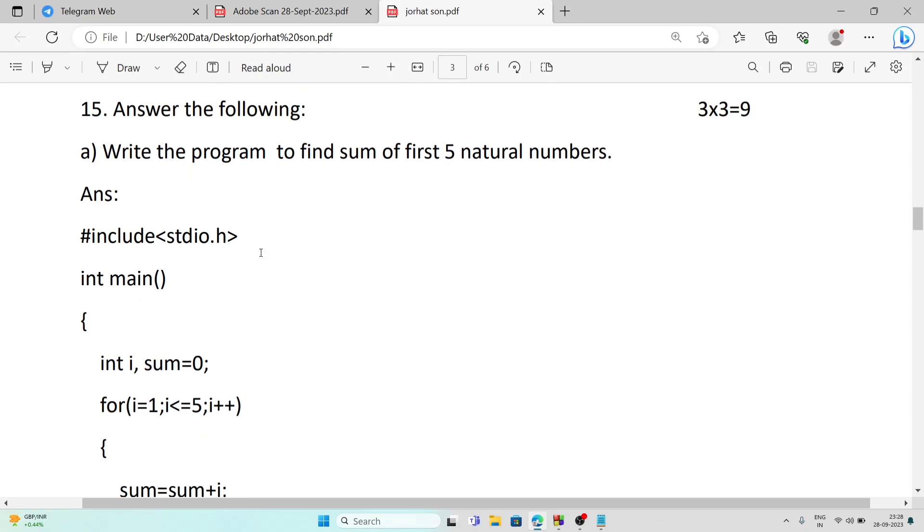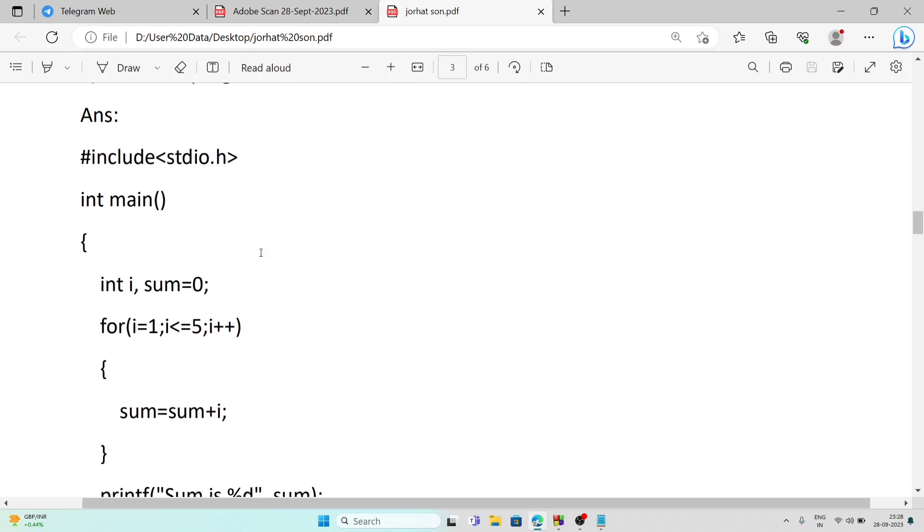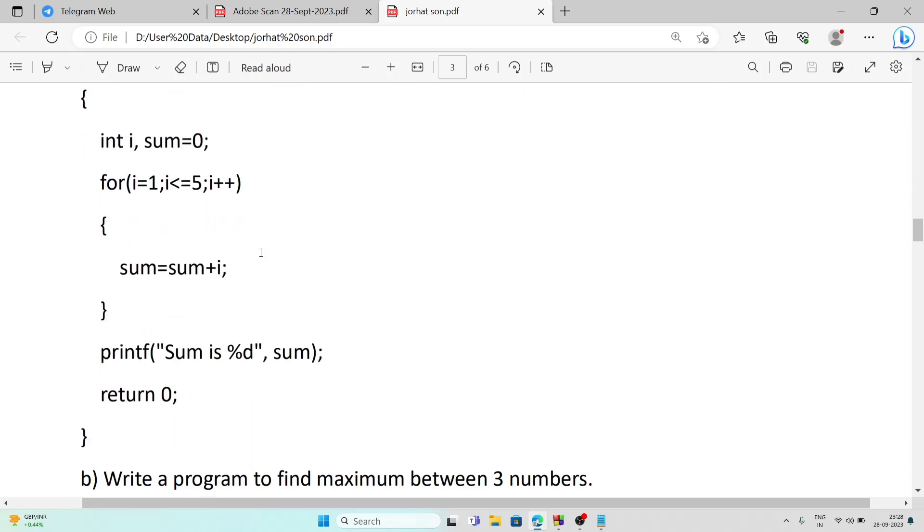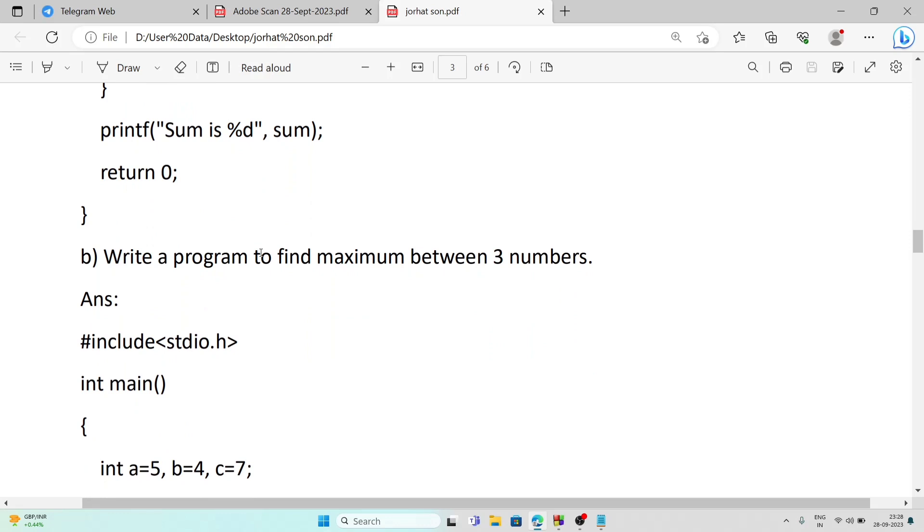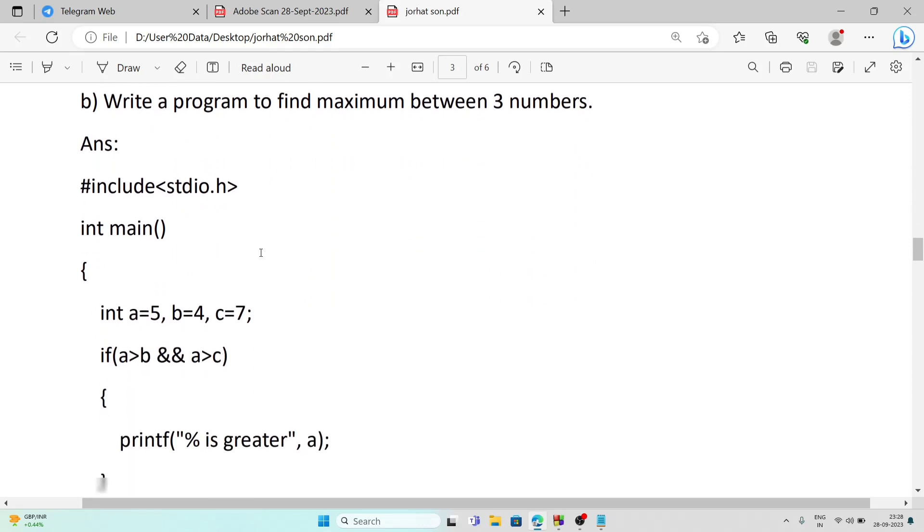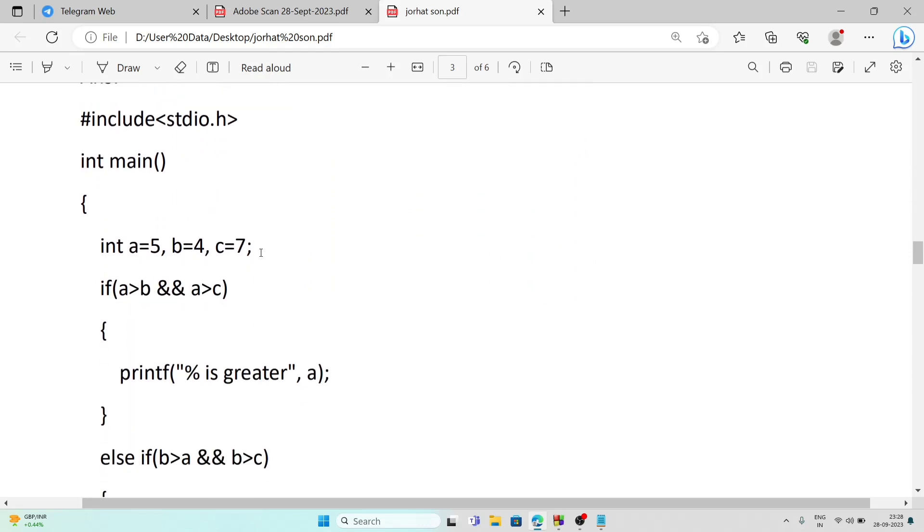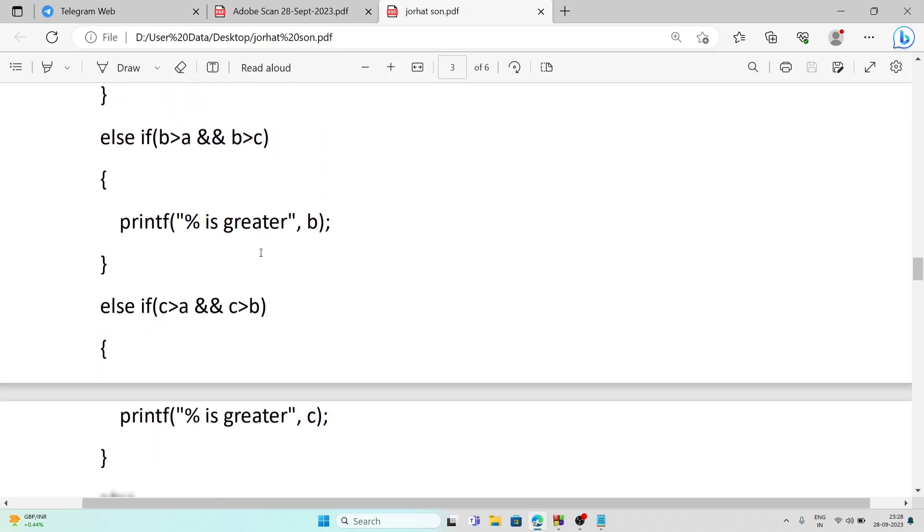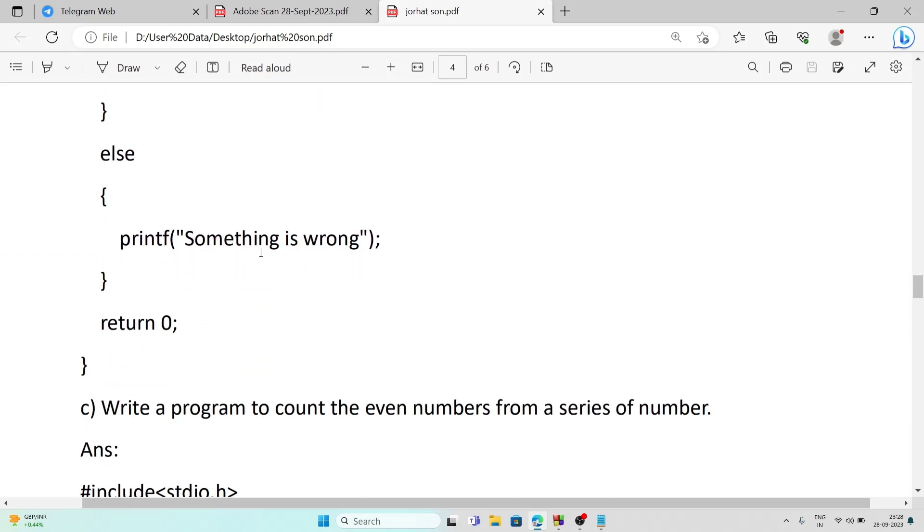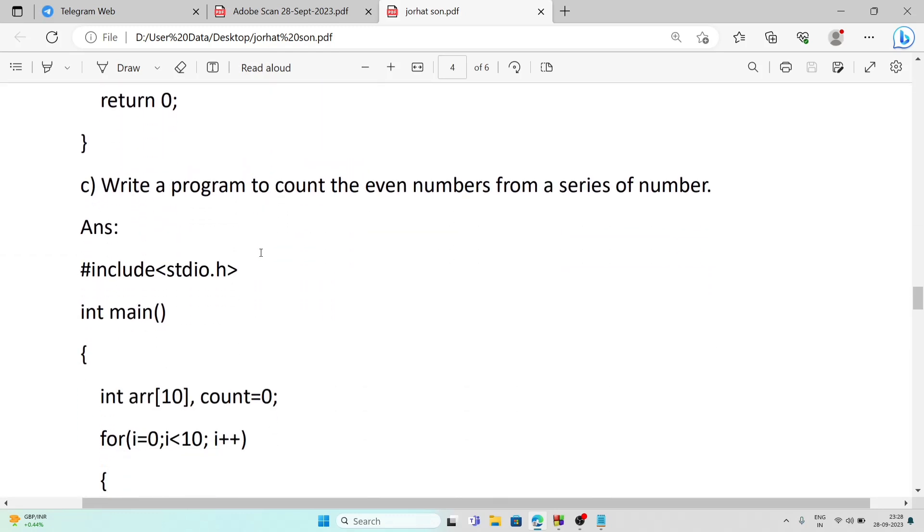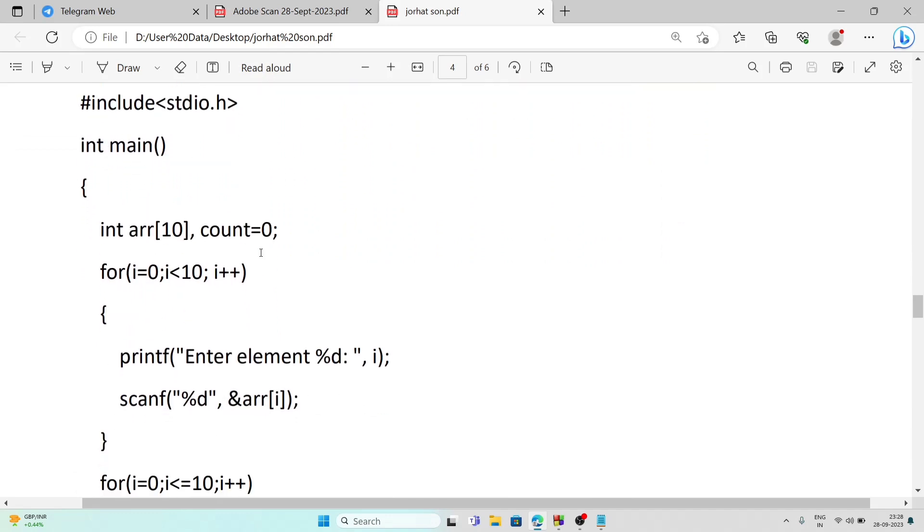%d is used to display integer value, %f for real numbers, and %c for character. These are programs - I have not done the flowchart, I have given the program for the particular questions. For question number 15, find summation of five natural numbers, the program will be this way. Next program, find maximum between three numbers, the program will be this way. After that, next come the even numbers, the program will be this way.